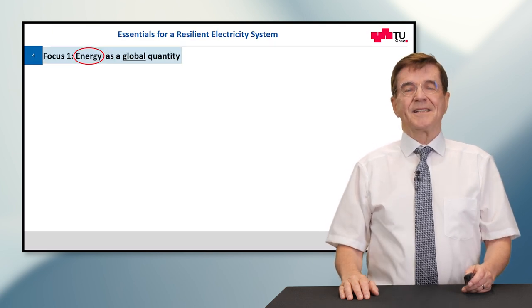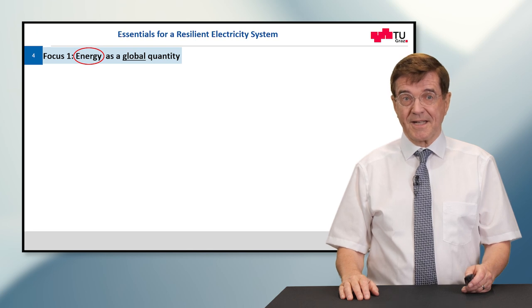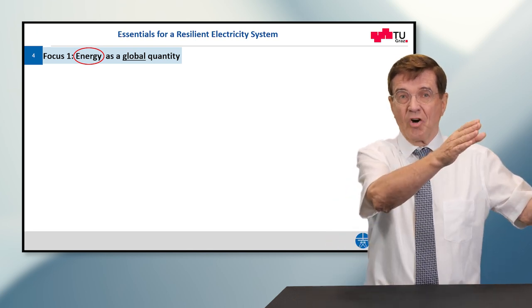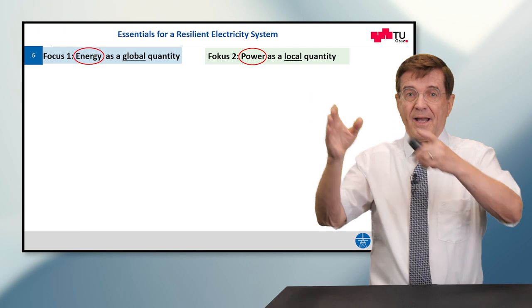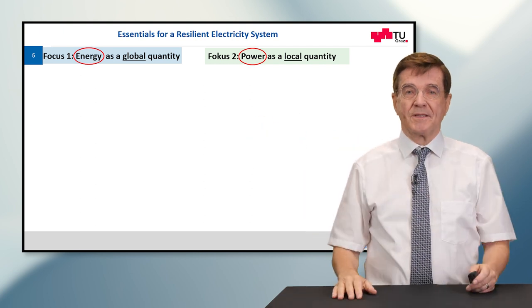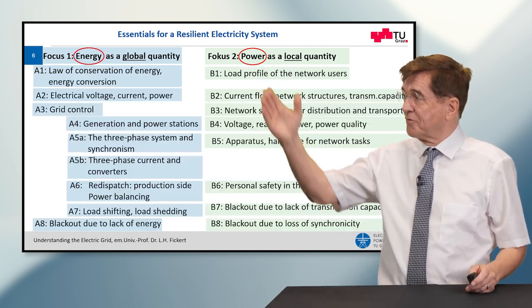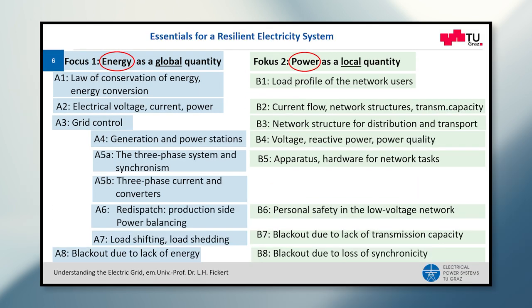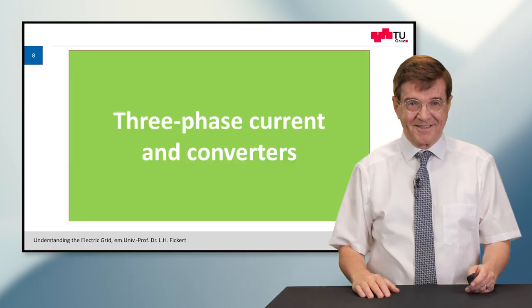So the essentials for resilient electricity systems are energy as a global quantity on one side and power as a local quantity on the other side. And for the sake of completeness I show you the full content of my course. Today we concentrate on three-phase current and converters. Now let's get started.